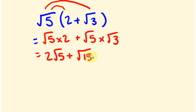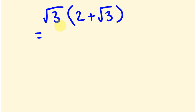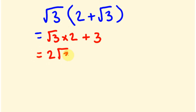Let's have a look at a harder type of question. Say we had the square root of 3, and we're going to multiply that by 2 plus the square root of 3. We expand the brackets: first the square root of 3 times 2, then plus the square root of 3 times the square root of 3. The square root of 3 times the square root of 3 is just 3, so our answer is 2 times the square root of 3 plus 3.